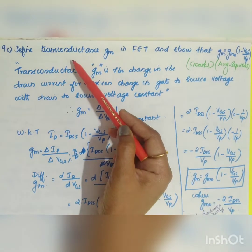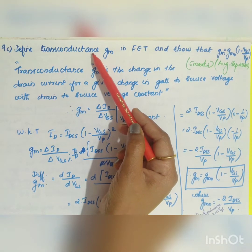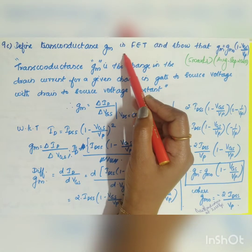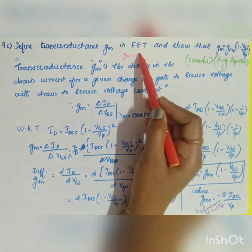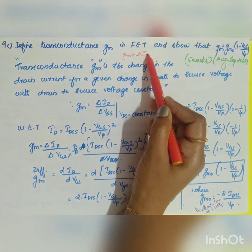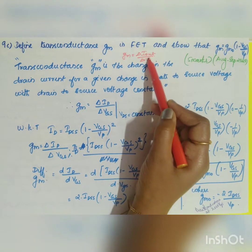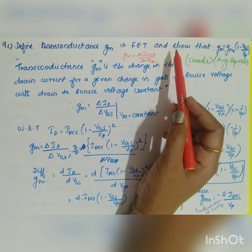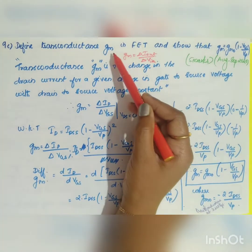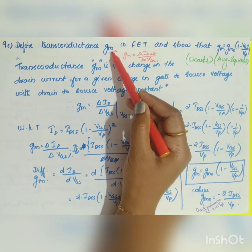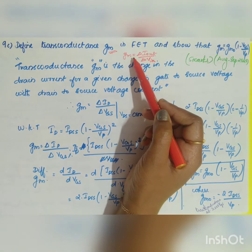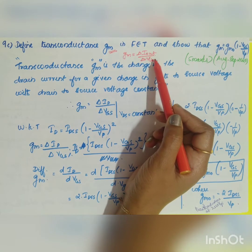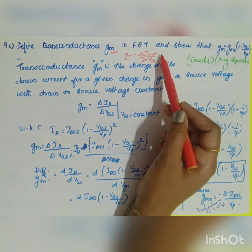Transconductance gm is the ratio of the rate of change of output current divided by input voltage — opposite to resistance. It is also called mutual conductance, which is why it has the suffix 'm' standing for mutual. So gm is equal to output current divided by input voltage.